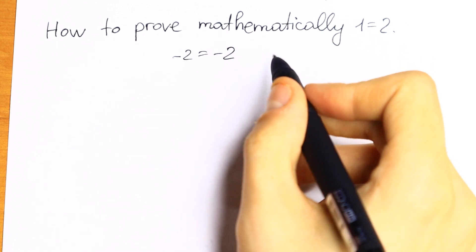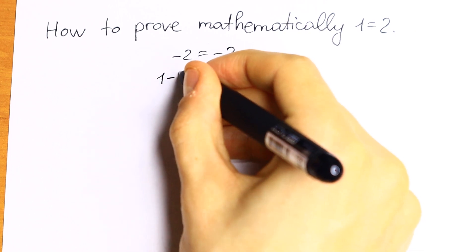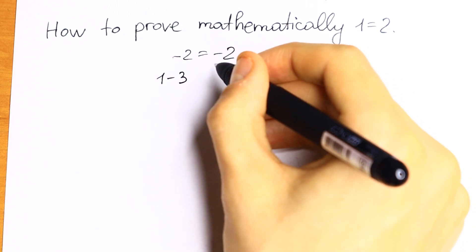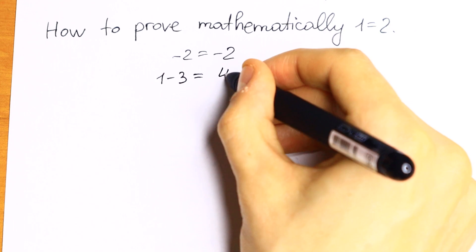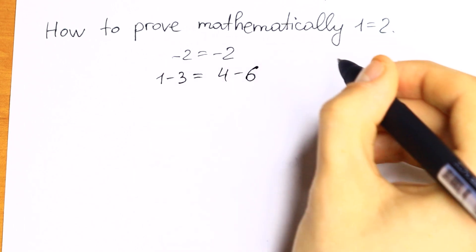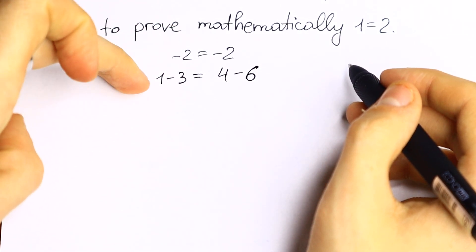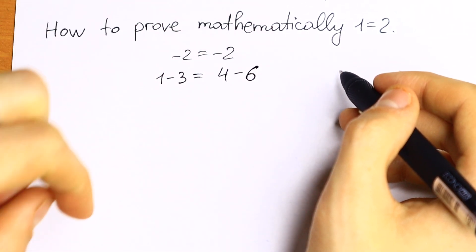So what are we going to do next? Minus 2 equals 1 minus 3, and minus 2 equals 4 minus 6. So we just express this minus 2 as 1 minus 3 and 4 minus 6.